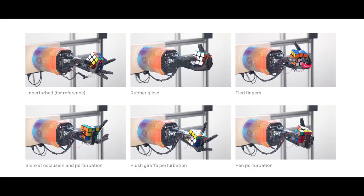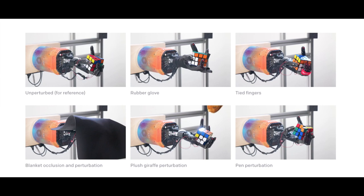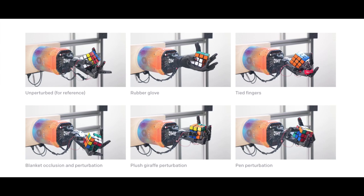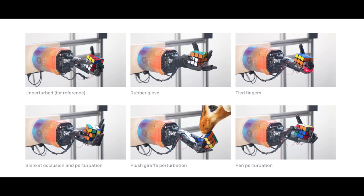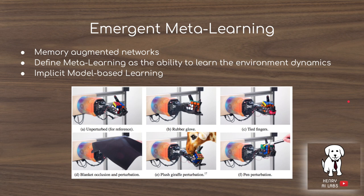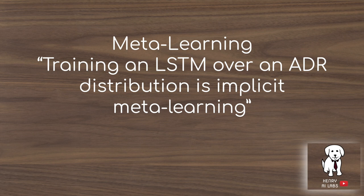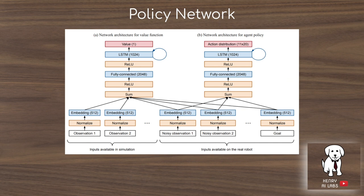The meta-learning algorithm gives rise to really interesting characteristics such as robustness to perturbations. Animations show different perturbations: wearing a rubber glove on the robotic hand, having tied-together fingers, a blanket occlusion, a plush giraffe pushing the Rubik's cube, and a pen pushing the cube. This emergent meta-learning is due to the memory-augmented LSTM layer in the policy network. Meta-learning here is defined as the ability to learn the environment dynamics — even if dynamics change, the model adapts and learns the new dynamics implicitly, encoded in the LSTM layers of the policy network that estimates the value function and policy in an actor-critic architecture.